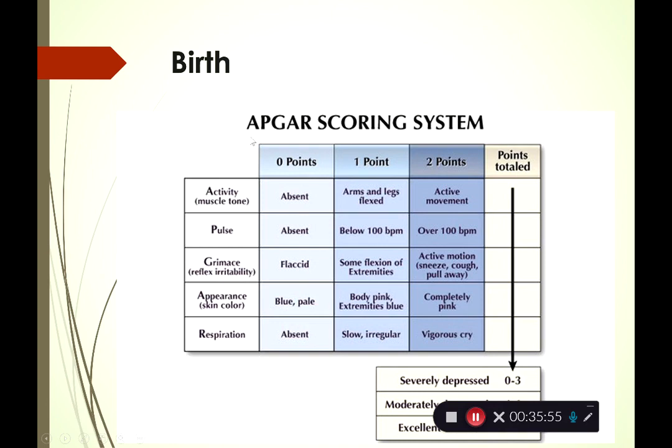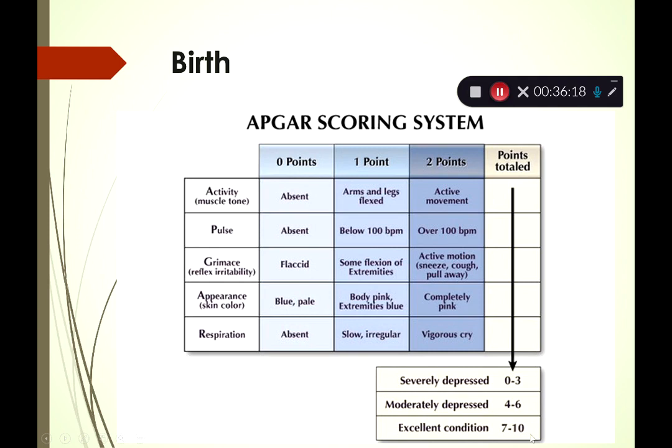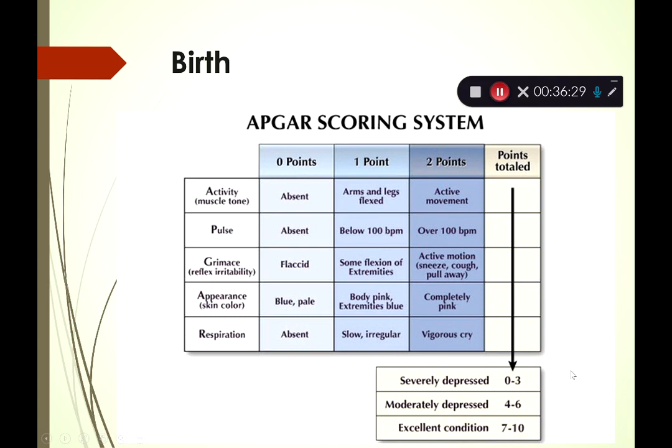A score of seven to ten means the baby seems to be in good shape. Four to six is moderately depressed — some medical interventions may be needed. Zero to three is an emergency requiring immediate life-saving interventions. Newborns are typically covered in vernix, a waxy covering that protects their skin in the water-filled uterus, and may have lanugo — fine hair to help regulate temperature — which disappears after a while.